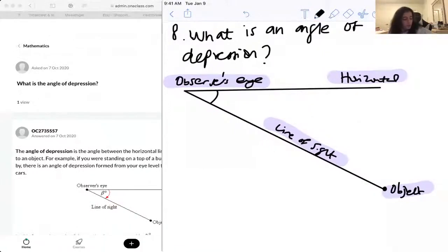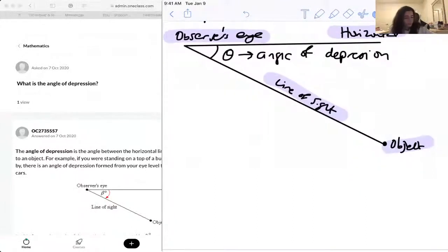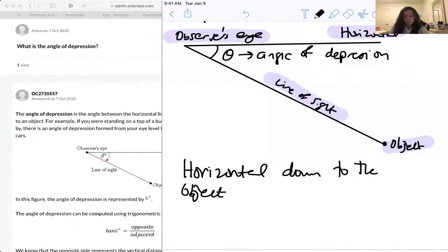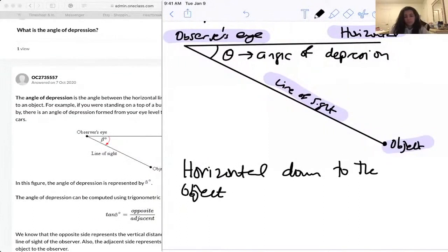Now the angle of depression is actually over here. It's the angle between the horizontal and your object or line of sight, so it's the angle between that. Just from the horizontal and down. So that is your angle of depression.